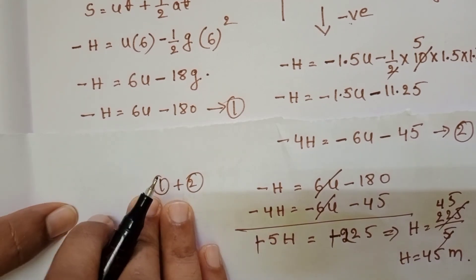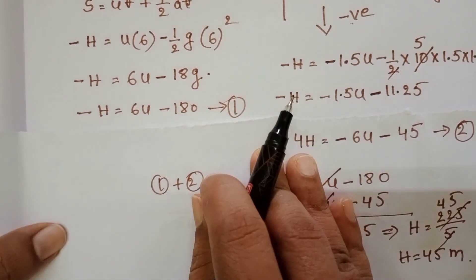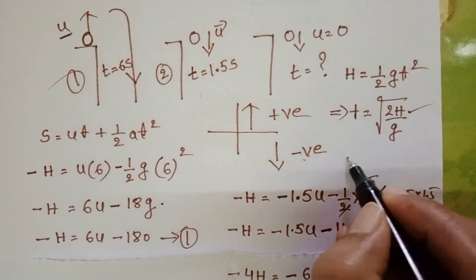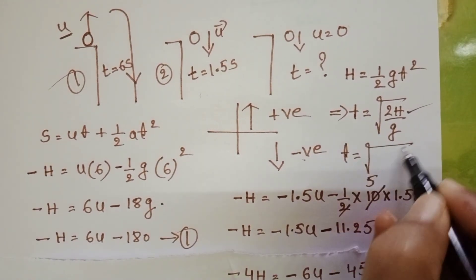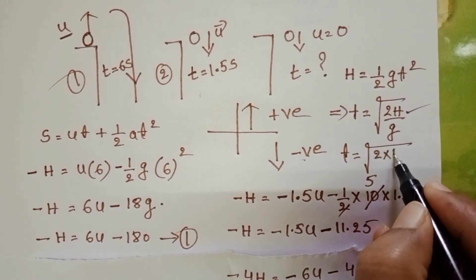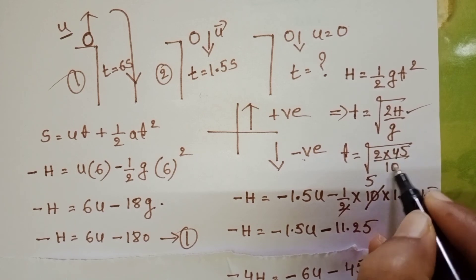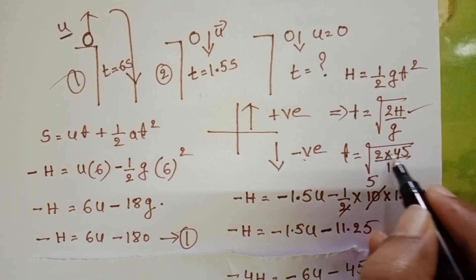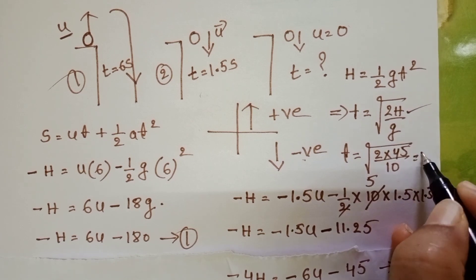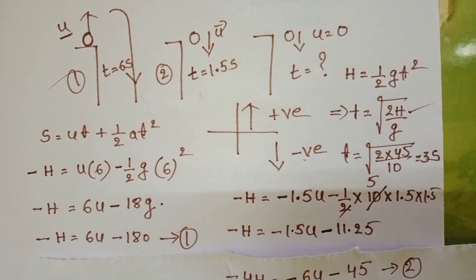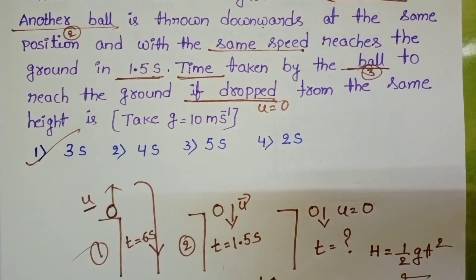Now in the third case, we find the time: T = √(2 × 45 / 10) = √9 = 3 seconds. The time taken by the third ball to reach the ground is 3 seconds. Checking the given options, the first option is correct.